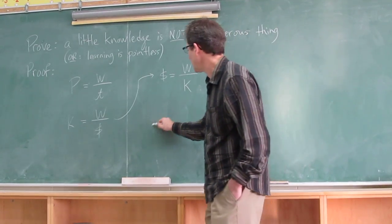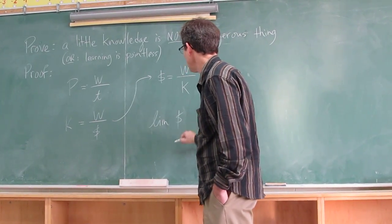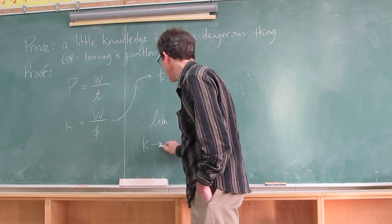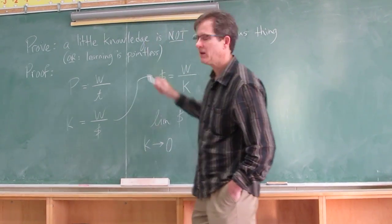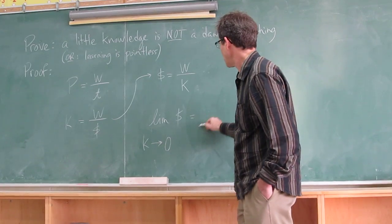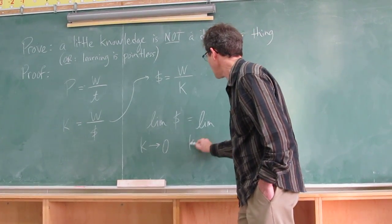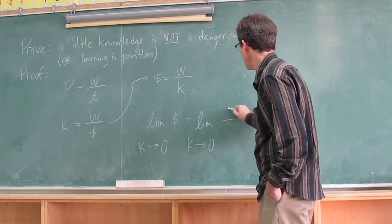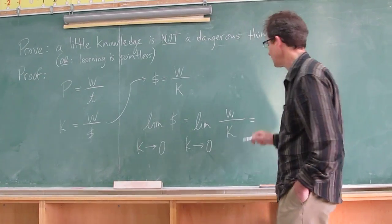Work divided by knowledge. So let's take the limit of money as knowledge approaches zero. In other words, a little knowledge. Well, that's equal to the limit as knowledge approaches zero of work divided by knowledge. What's that equal to?